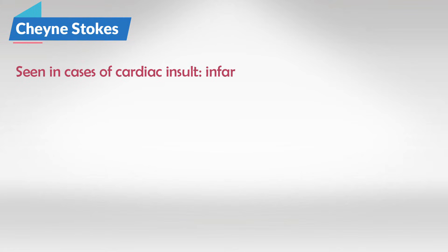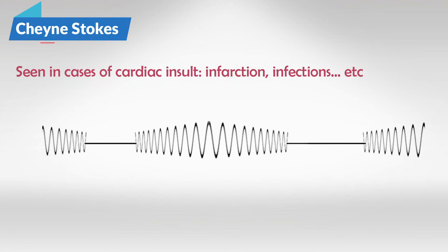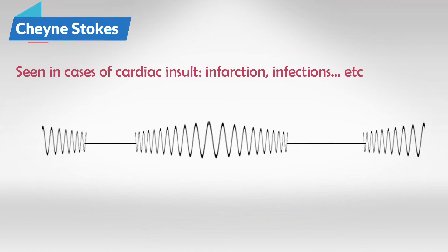Cheyne-Stokes pattern is seen in patients who are having cardiac damage, most commonly myocardial infarction or angina. Cheyne-Stokes pattern is described as a period of increasing then decreasing breathing, followed and preceded by a period of apnea. And it goes something like this.